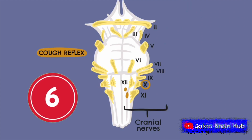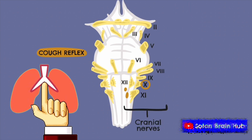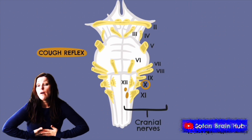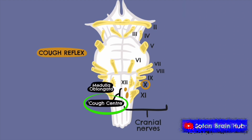The cough reflex involves insertion of an endotracheal catheter to the carina of the bronchial tree — the ridge of cartilage at the base of the trachea that marks where the trachea splits into the left and right main bronchi. Normally this would trigger a cough with visible movement of the vocal cords, but in brainstem death this reflex is absent. The afferent and efferent nerve is the vagus nerve, and the nuclei involved are multiple nuclei in the medulla oblongata which form the cough centre.